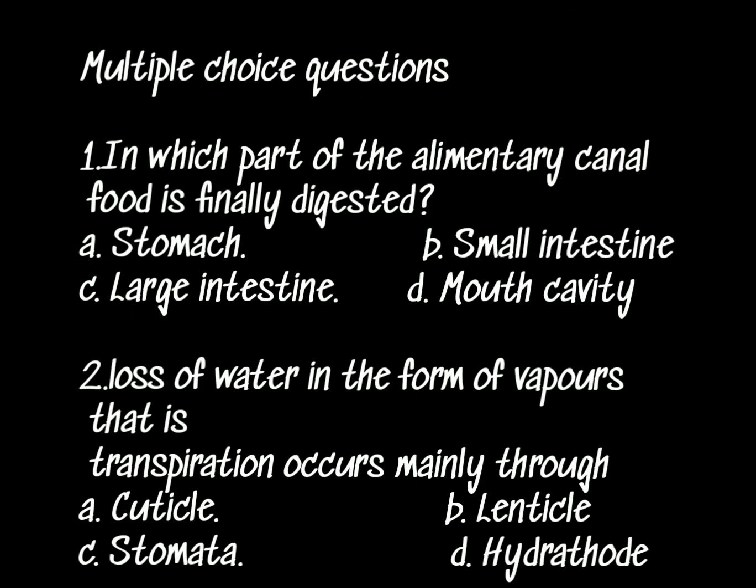Question 1: In which part of the alimentary canal is food finally digested? The options are: stomach, small intestine, large intestine, or mouth cavity. Question 2: Loss of water in the form of vapors, that is transpiration, occurs mainly through...